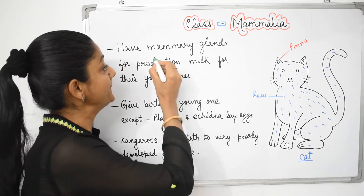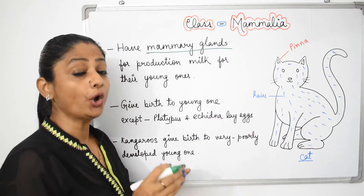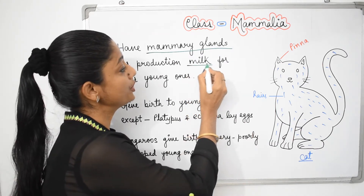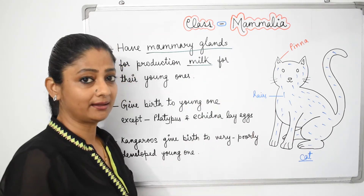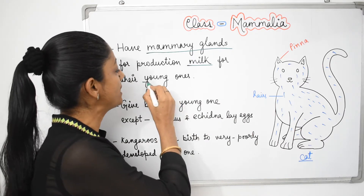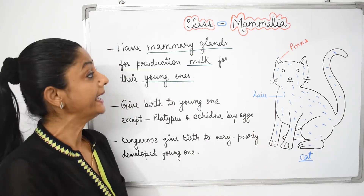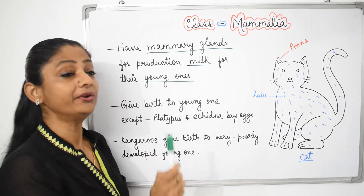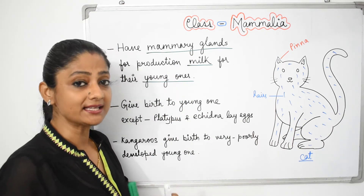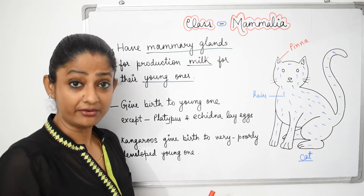In all mammals, we get a mammary gland. This mammary gland produces milk for our young ones, for our children. Because of the mammary gland, this class is called Mammalia.